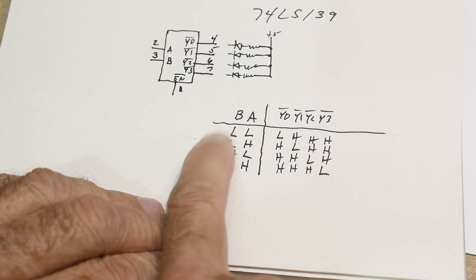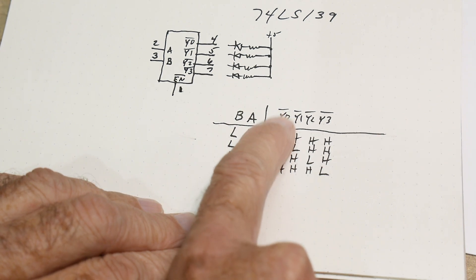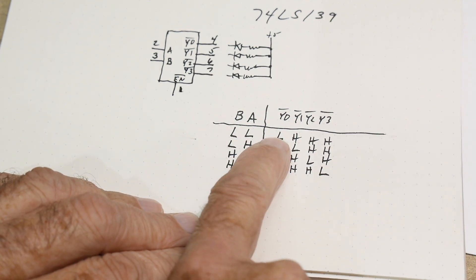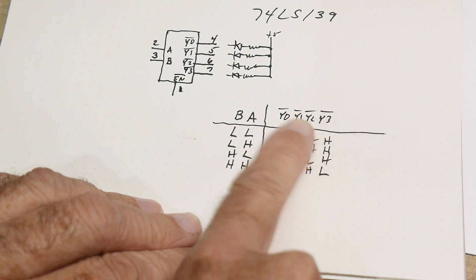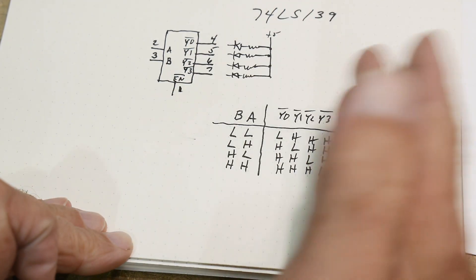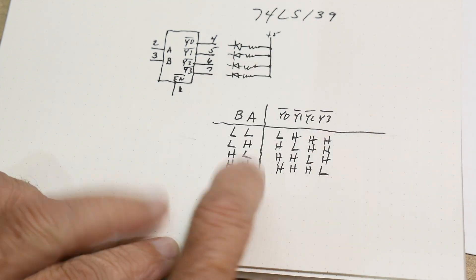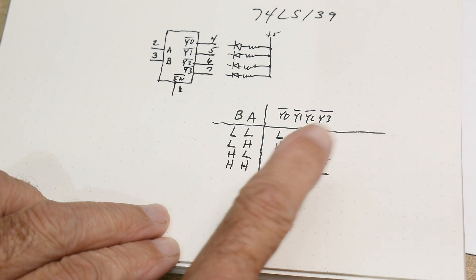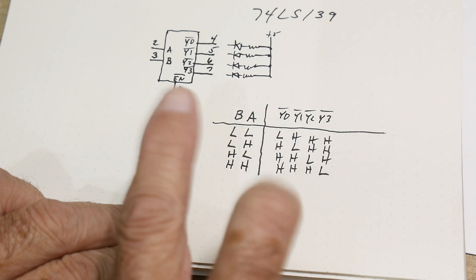And so here you can see that if it's zero zero, then the Y zero goes low. So it's a low true logic on the output. And so basically it counts along. We saw another chip similar to this, but it was an 8-bit chip. But this is a dual 4-bit chip.